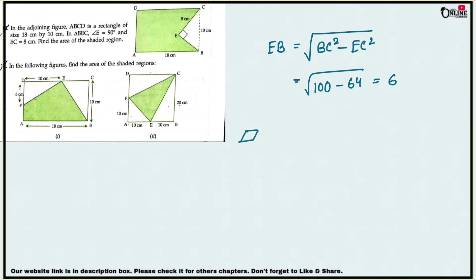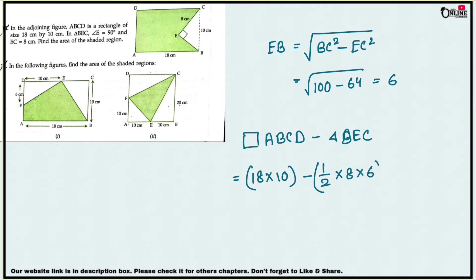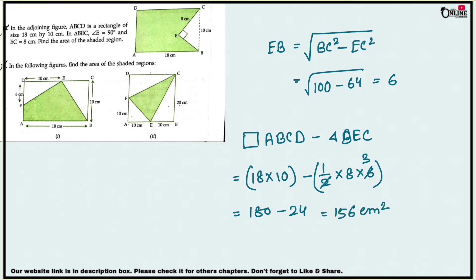To find the area of the shaded region: area of rectangle ABCD minus area of triangle BEC, which is 18 times 10 minus half times 8 times 6 — that is 180 minus 24 — giving a final answer of 156 centimeter square.